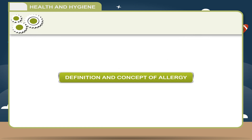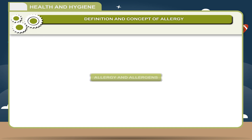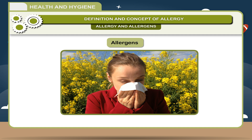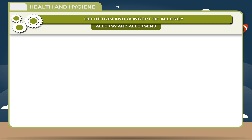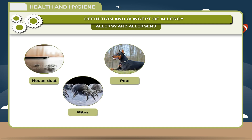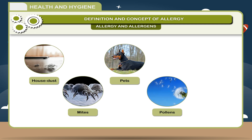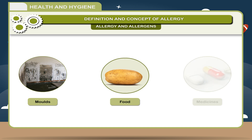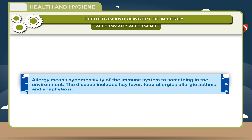Definition and Concept of Allergy — Allergy and Allergens. When the body reacts to any substance present in the environment that is harmless for most people, these substances are known as allergens — like house dust, mites, pets, pollens, insects, molds, food, and even some medicines. Allergy means hypersensitivity of the immune system to something in the environment.